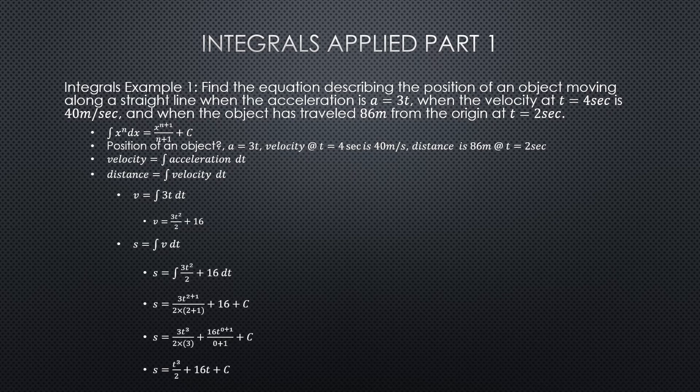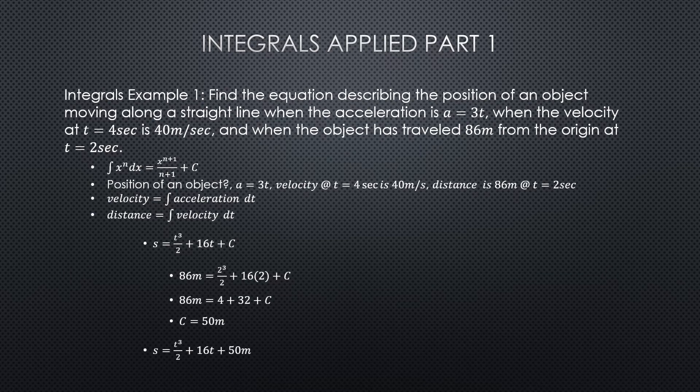We put that C back into the velocity formula and get v equals 3t² over 2 plus 16. Now we take the integral of velocity to get our distance, ending up with a distance equation equal to t³ divided by 2 plus 16t plus C. We solve for C in the distance formula using 86 meters at t equals 2 seconds, and we get a final equation of s equals t³ over 2 plus 16t plus 50 meters. That is the equation describing the position of the object — that is our final answer.